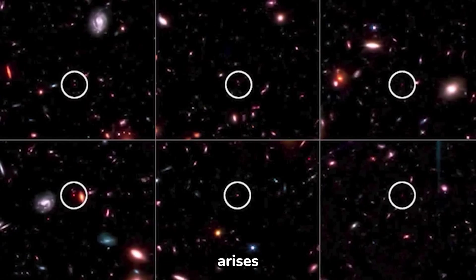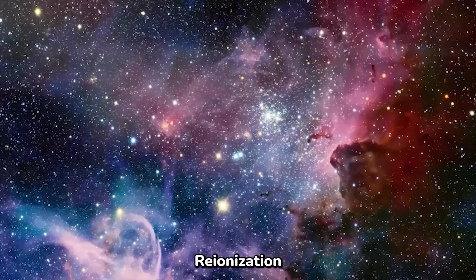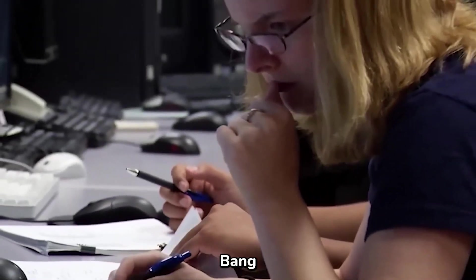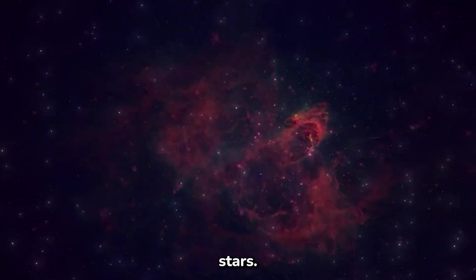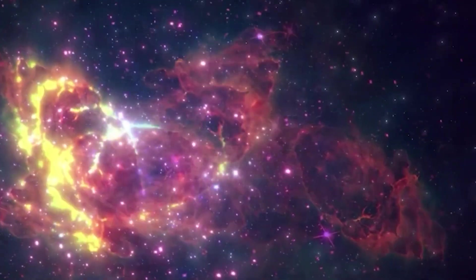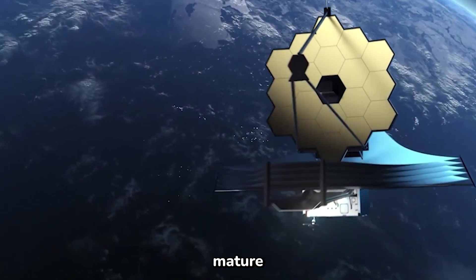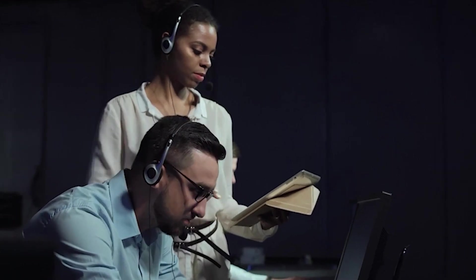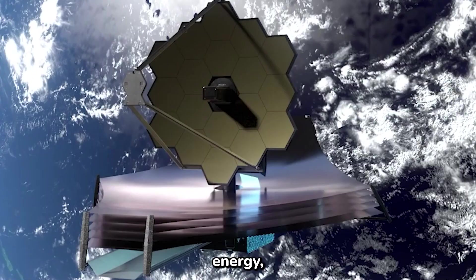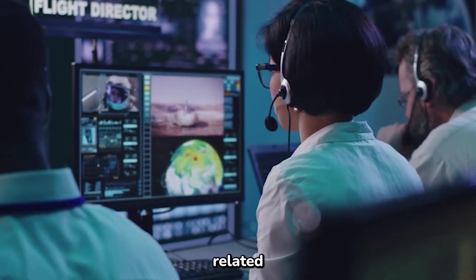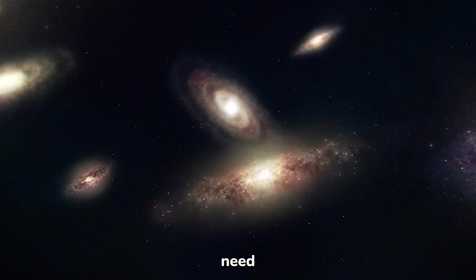However, the contradiction arises from the fact that if everything happened according to our previous understanding, the reionization process would have occurred more than 1 billion years after the Big Bang, followed by the formation of more stable stars. It would have taken billions of years for galaxies to begin to appear. Yet, we have observed mature galaxies with ages as young as 500 to 700 million years old. This raises questions about the theory of dark energy, the rate of cosmic expansion, and the presence of other mysterious factors related to matter and energy that we may still need to discover.